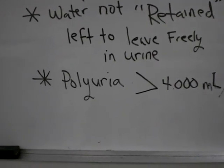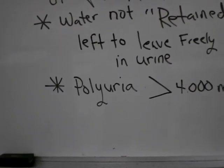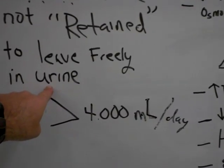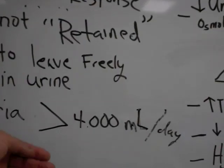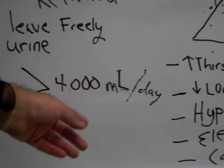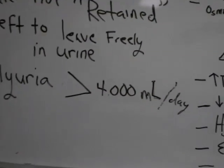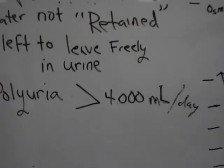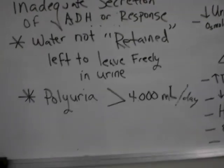Think of it like a garden hose on full blast that you let go — the patient is going to urinate an incredible amount. The least amount would be 4,000 mL a day, which is a lot considering normal is 1,200 to 1,500 mL. It may go up much further than that — greater than 6,000, and even then some.